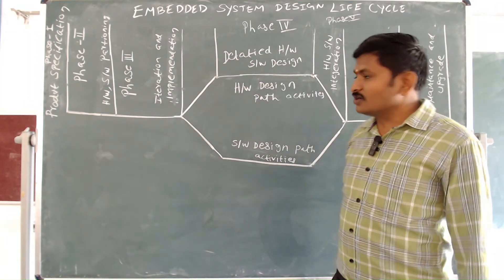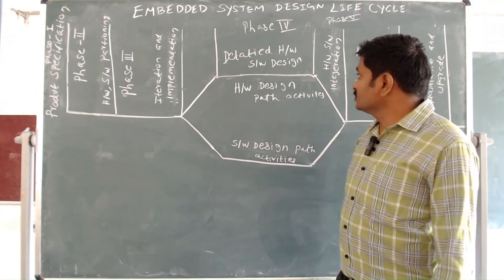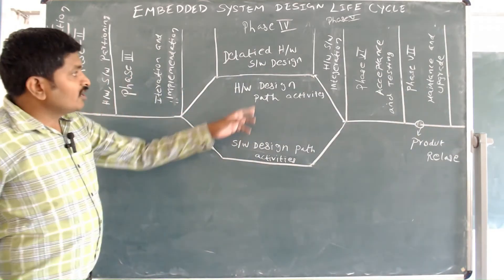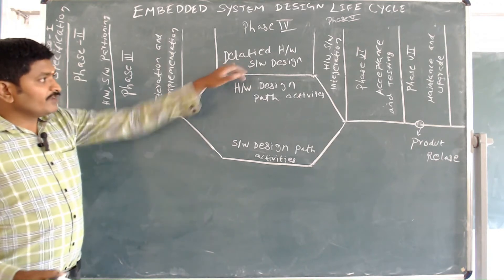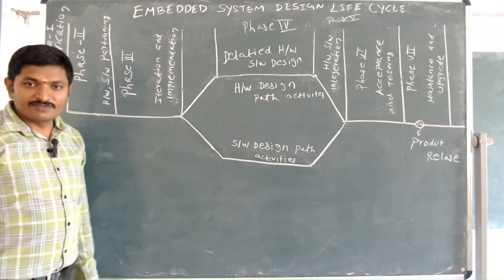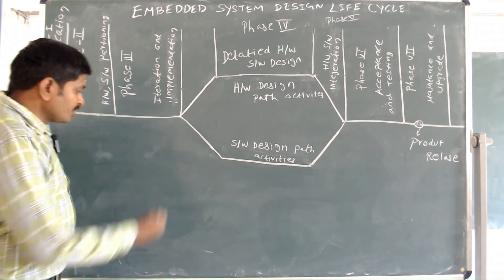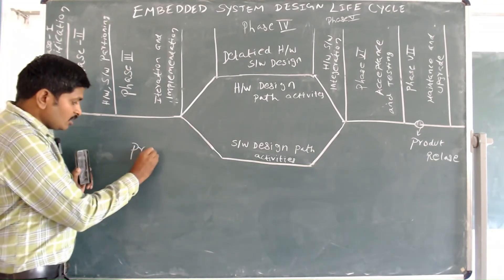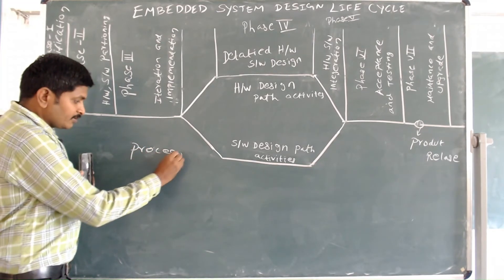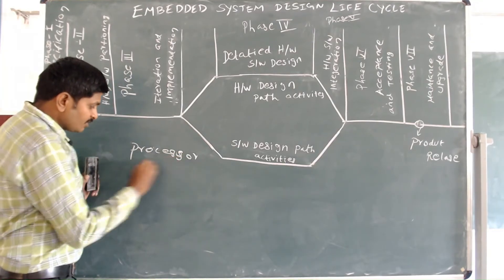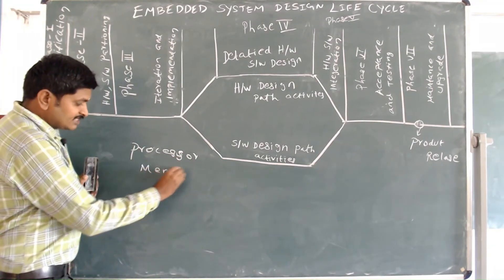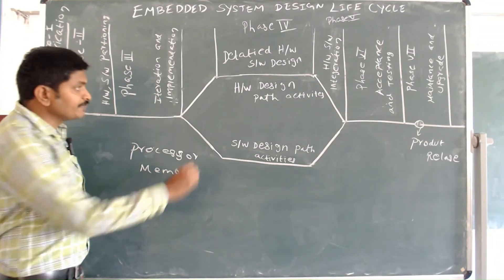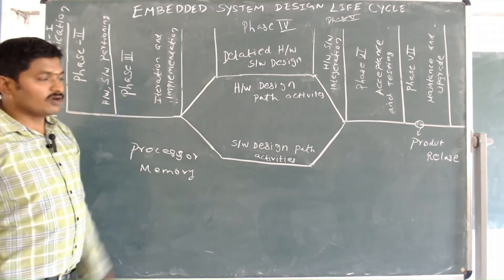In phase four, detailed hardware and software design, both hardware and software are developed in parallel. On the hardware side, components such as processor, memory, sensors, actuators, and input/outputs are chosen.